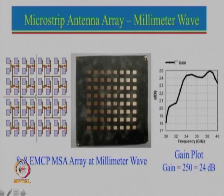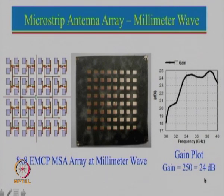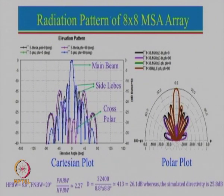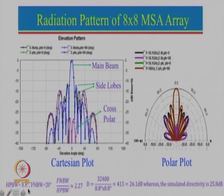Instead of 8 by 8, if we used 16 by 16, the array size is increased by 4 times and the maximum gain can increase by about 6 dB, but because of some feed losses it may be about 5 to 5.5 dB — so we can get about 29 dB. A 30 dB gain would be equivalent to a gain of 1000. Looking at the radiation pattern plot, both the polar plot and Cartesian plot are shown. The E-plane and H-plane are almost the same with the same beam width, because it is a symmetrical 8 by 8 array. The half power beam width is about 8.8 degrees in both planes.